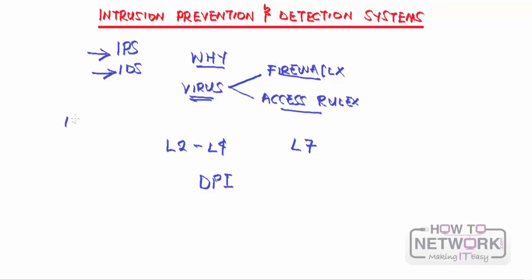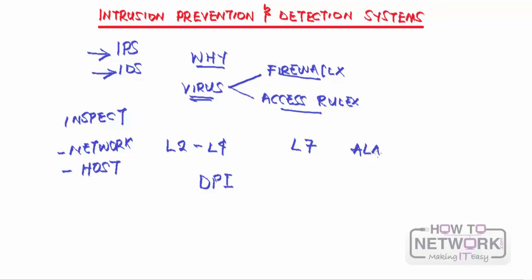This is why we need intrusion prevention systems and intrusion detection systems. They are purposely built to inspect traffic going through a network or through a host — so we have both network IPS and host IPS or IDS.